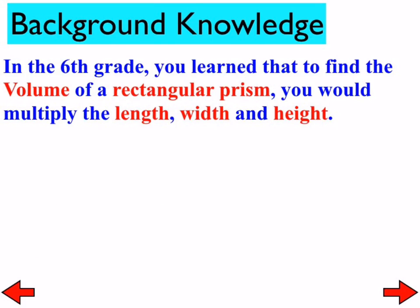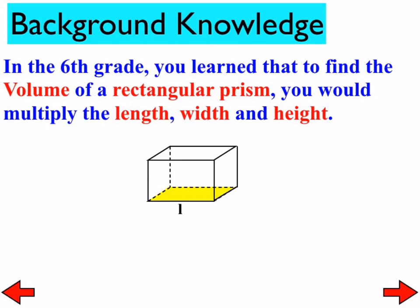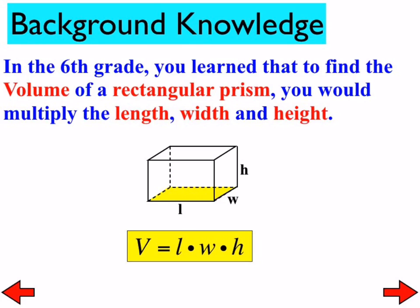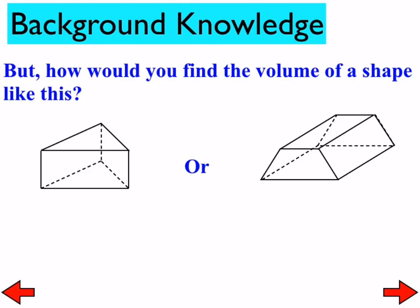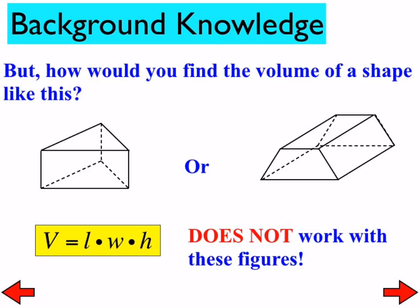In 6th grade, you learned that to find the volume of a rectangular prism you would multiply the length times the width times the height. I always hate the fact that it's taught that way, because it doesn't really tell you what's happening. What if it's not a rectangular prism—what if it's a trapezoidal prism, or a triangular prism, or some other sort of prism? This idea of length times width times height doesn't work. The shape on the left is a triangular prism; the shape on the right is a trapezoidal prism. So we have to sort of undo that thinking and get to a method that really works on any sort of prism.